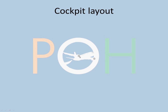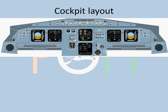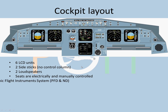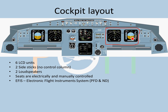Next up is the cockpit layout. The A320 cockpit has six LCD units, two side sticks — no control columns — and two loudspeakers. The seats are electrically and manually controlled. The EFIS panel has your PFD and your ND. The PFD displays speed, pitch, bank, altitude, heading, vertical speed, and so on.